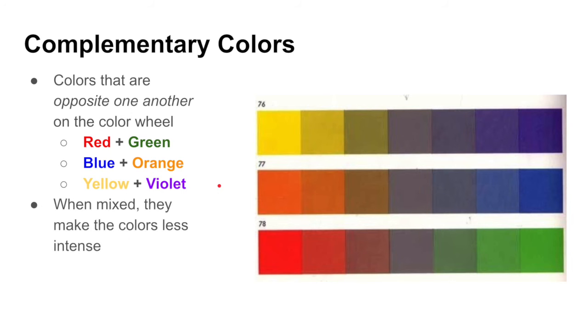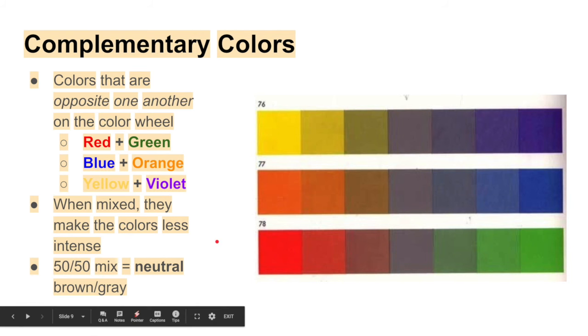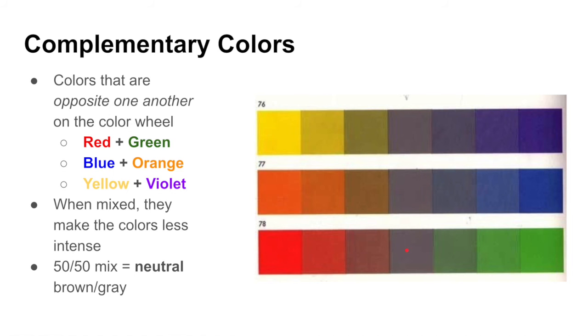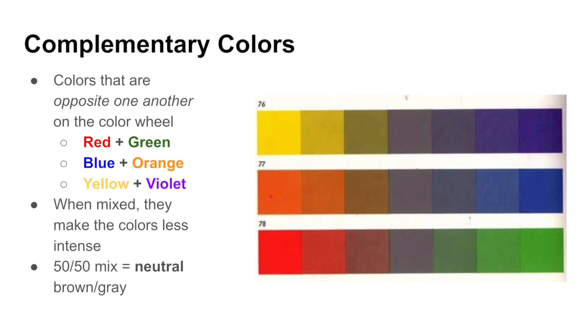And when we mix complementary colors together, they tend to make the colors less intense. So when we look at these color schemes here, if we want to tone down yellow a little bit, we might add just a drop of violet to it. Or maybe if we want to make our green a little darker and more hunter green, we'll add some red to it. Same with this way, if we start at red and we want to make it a little bit more maroon, we'd add some green to it. But a 50-50 mix of complementary colors, so half red, half green, would give us something called a neutral. So it's going to be kind of a brownish gray color usually. But yeah, so complementary colors are opposites and they work really well when we need to neutralize our colors or tone them down.